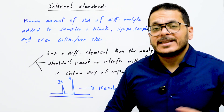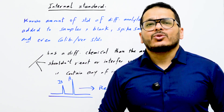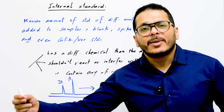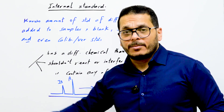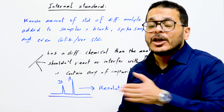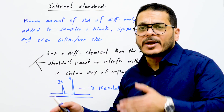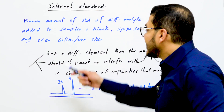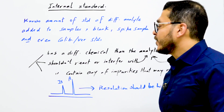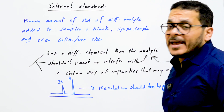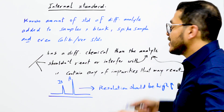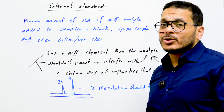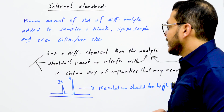The internal standard will be added in the same amount to all samples from the beginning to the end. For example, if you add 200 microliters, you will add 200 microliters to all of them — the same amount added to every sample, including blank, spike, and quality control samples. It must have a different chemical structure than the analyte, should not react or interfere with the analyte of interest, and should not contain any impurities that may react with the analyte.